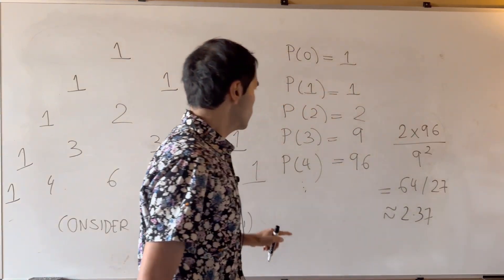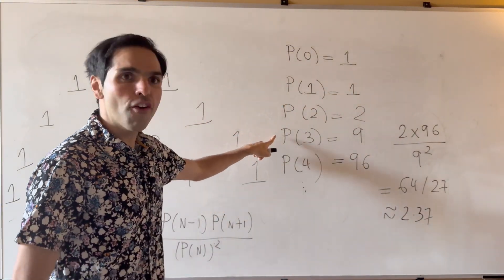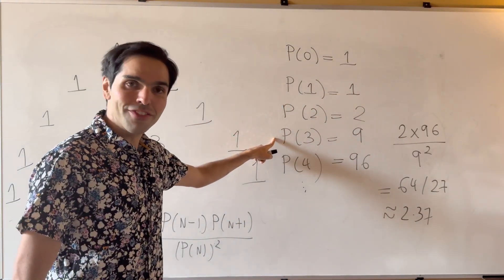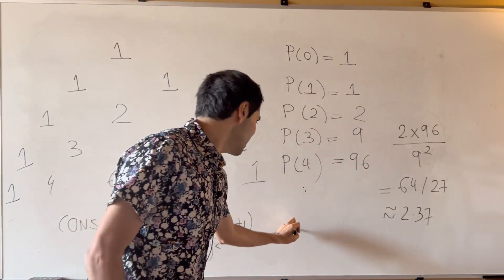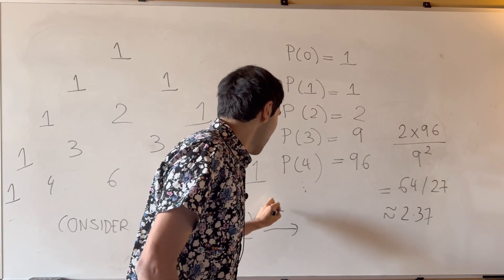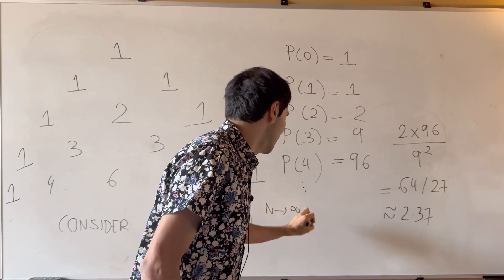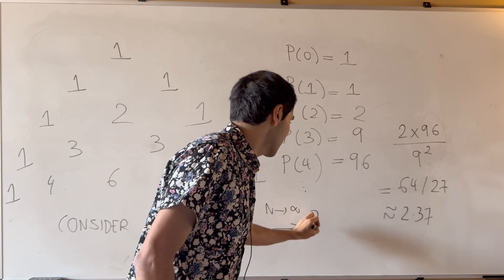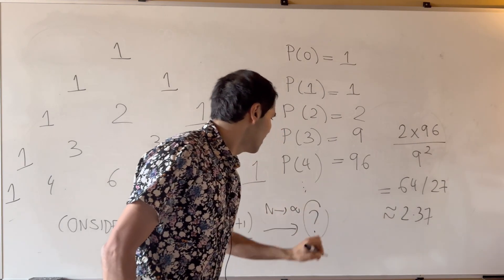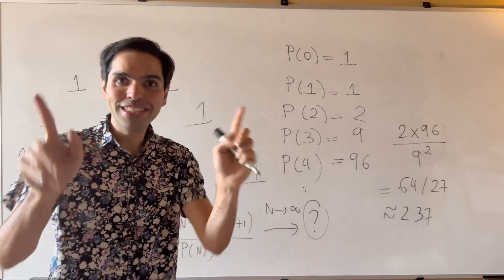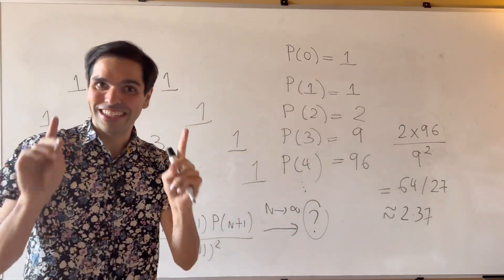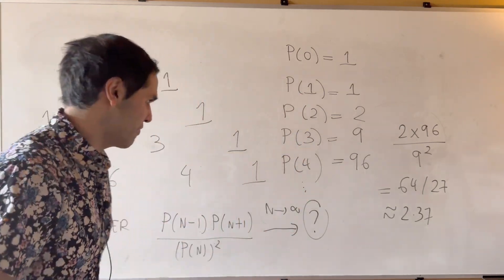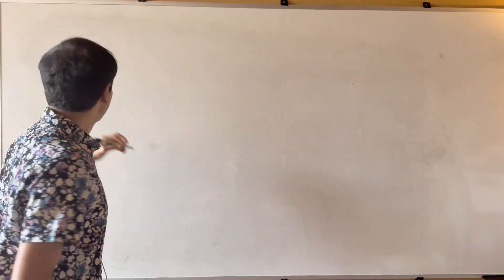That is roughly 2.37 for n=3. The question is: what happens as n goes to infinity? The answer is very surprising, so bear with me.